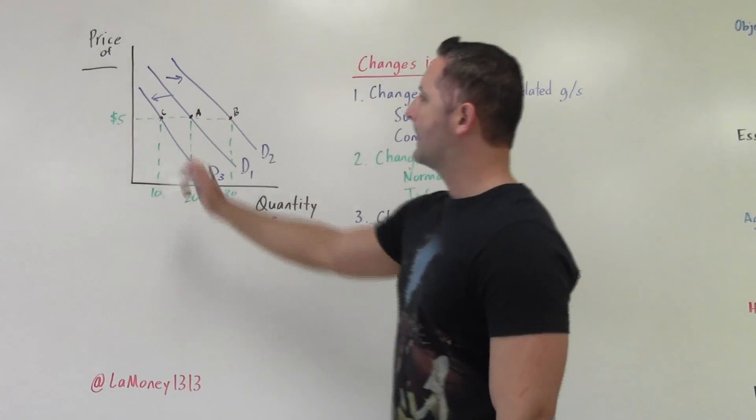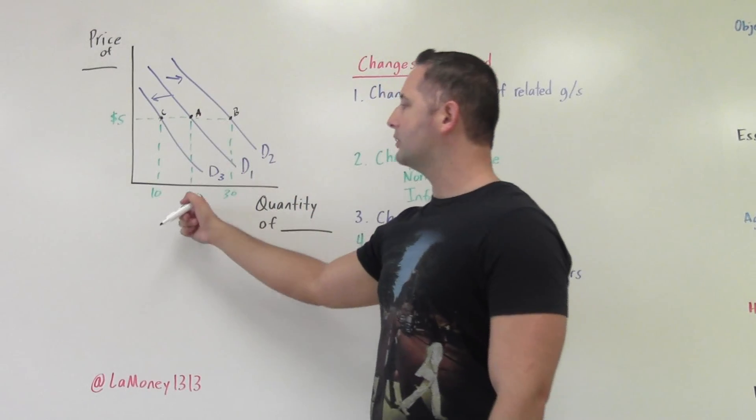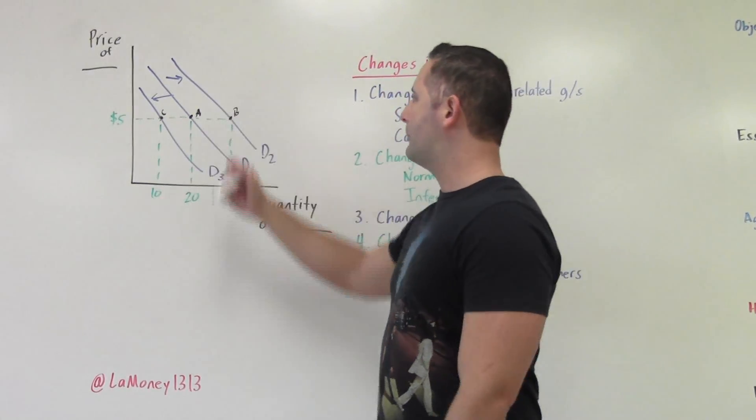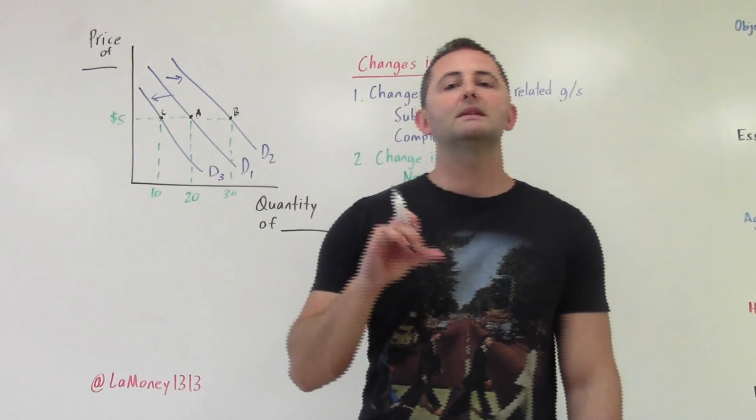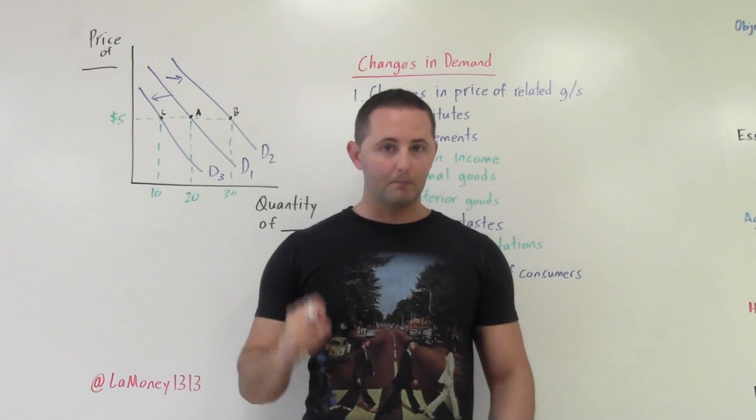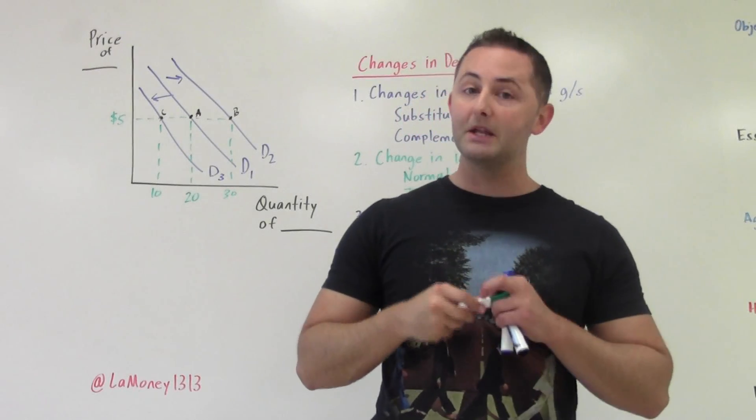So what is happening here? The price has stayed the same, $5. And yet at point A, we're demanding 20 of this item. At point B, we're demanding 30. And at point C, we're only demanding 10. So what this means is something else